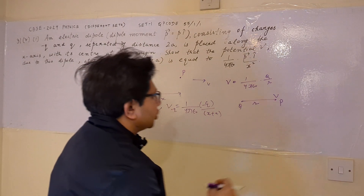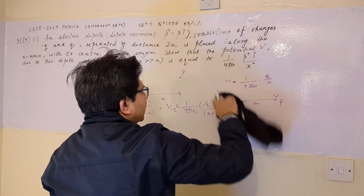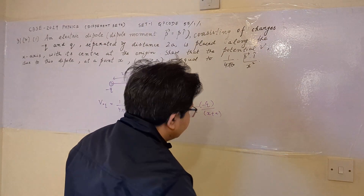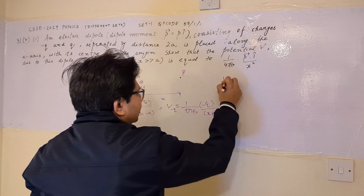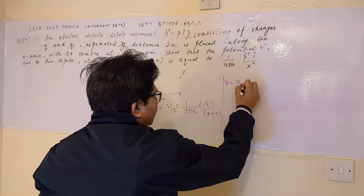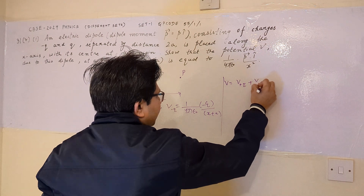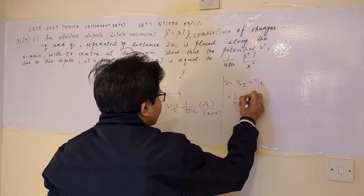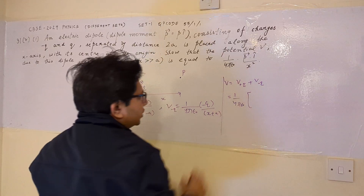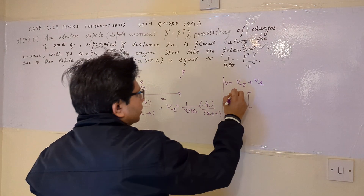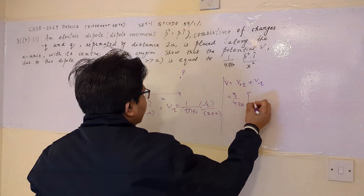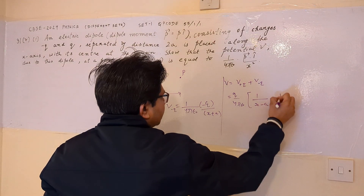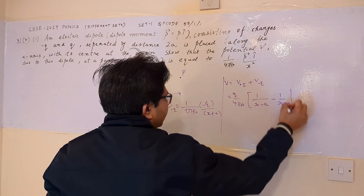We calculate the total potential as the algebraic sum of these two potentials, V plus q and V minus q. This value comes out to be 1 upon 4 pi epsilon naught, with q as a common factor, giving us 1 upon (x minus a) minus 1 upon (x plus a).